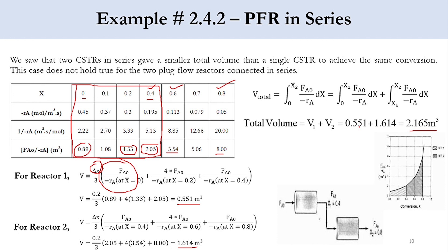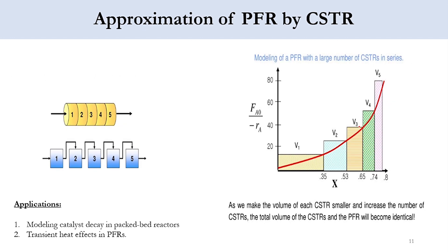Finally, a PFR can be approximated by multiple CSTRs in series. As we make each CSTR's volume smaller and increase the number of CSTRs, the total CSTR volume approaches that of the PFR, since both represent the area under the curve. Applications of this modeling include catalyst decay in packed bed reactors and studying transient heat effects in PFR.